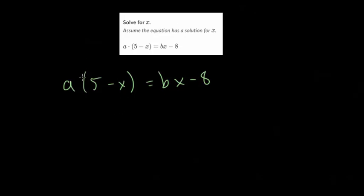In our general strategy, the first thing you want to do is get rid of parentheses by distribution. So if you see parentheses, and you can get rid of them, do so. You get a times five, which is five a, and then a times x, which we'll just write as ax. And then we have equals bx minus eight.